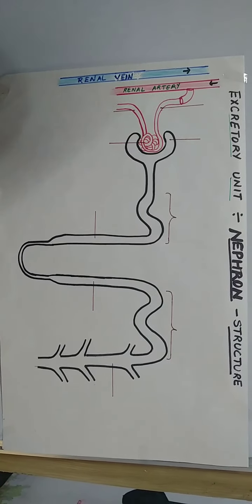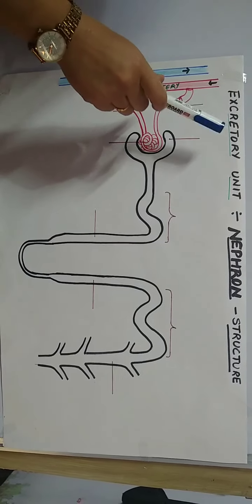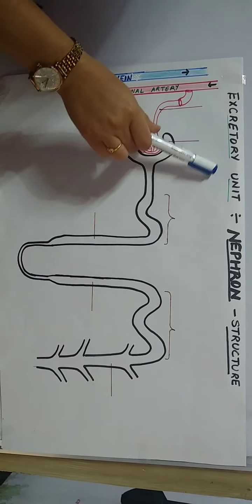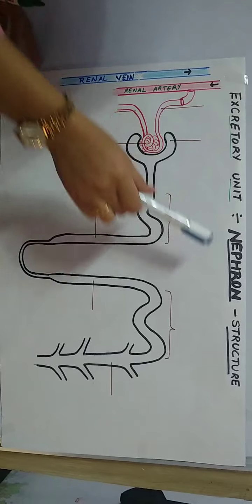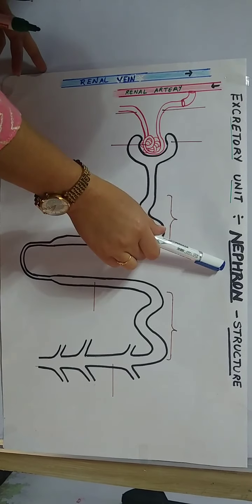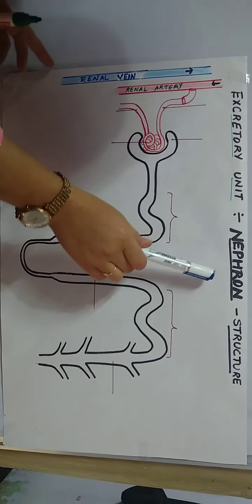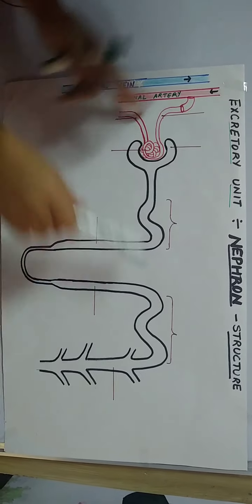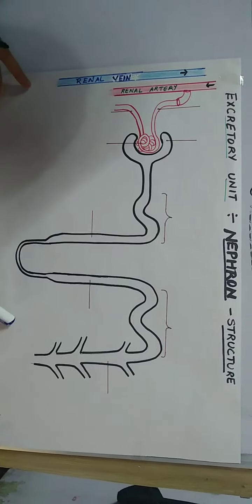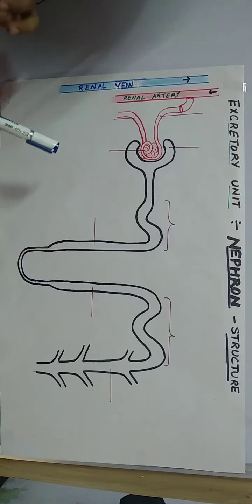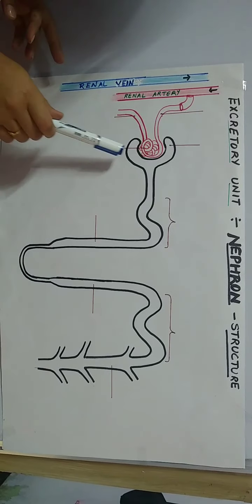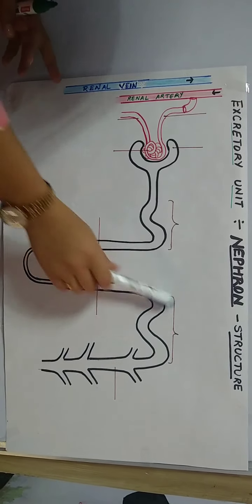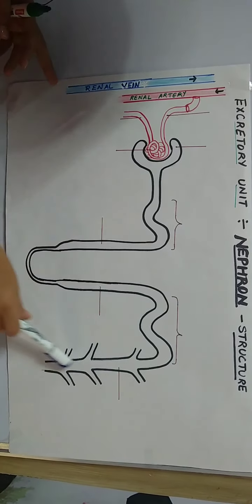Hello students, today we will study the excretory unit of our excretory system, that is the nephron. We will study the structure of nephron. As you can see in this diagram which I have drawn, this is a long convoluted tubular-like structure.